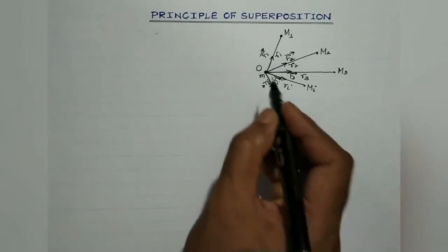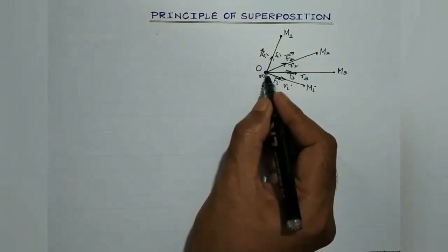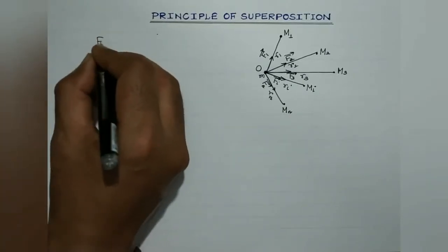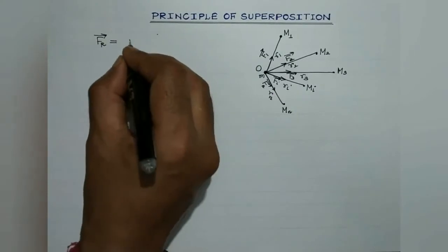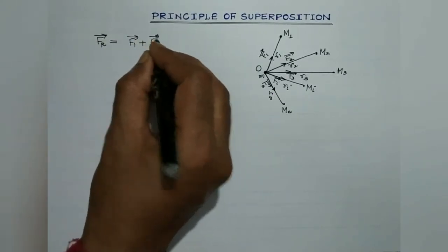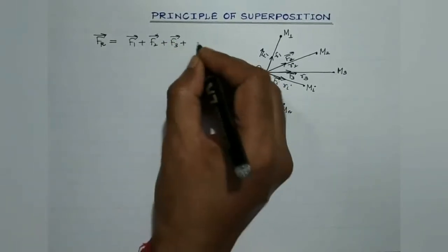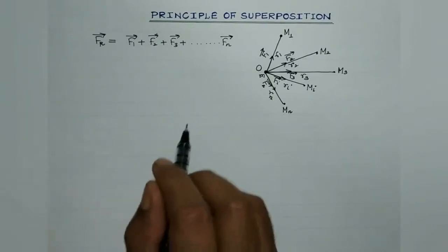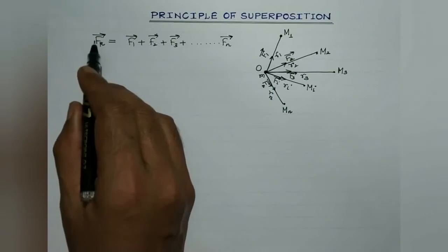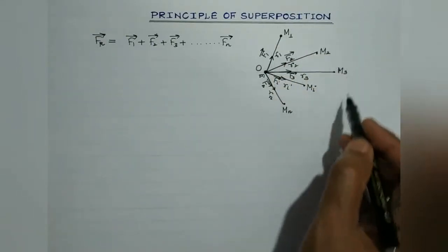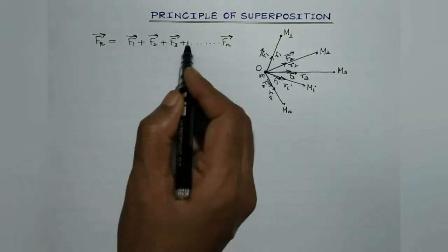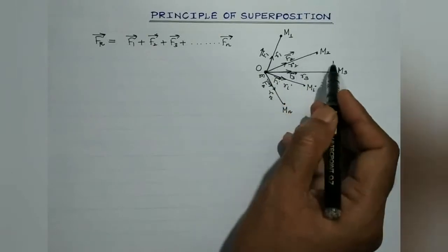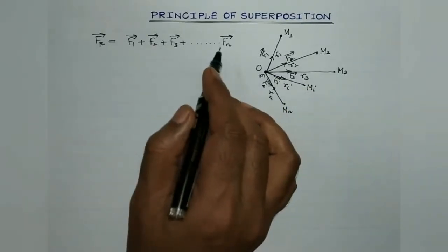The principle of superposition states that the net resultant force acting at point O on mass m due to the presence of all the other bodies is given by the vector sum: F1 + F2 + F3 + ... + Fn. It is the vector sum of the forces exerted by the individual bodies on the given body. This statement is known as the principle of superposition.